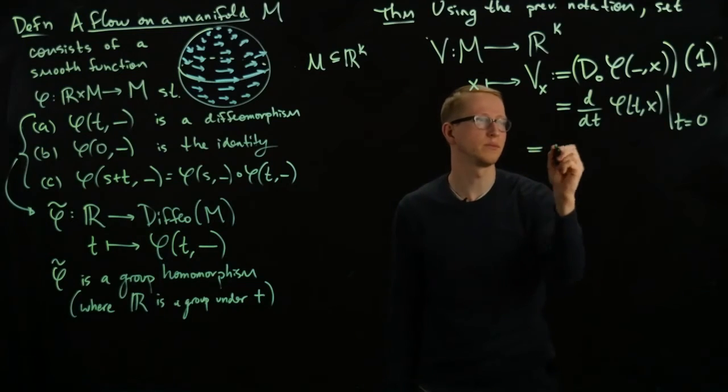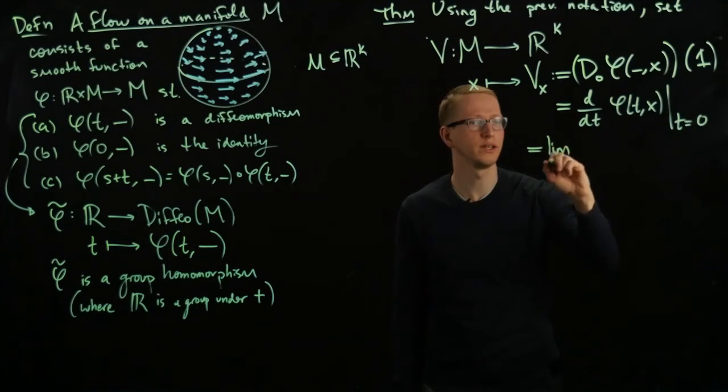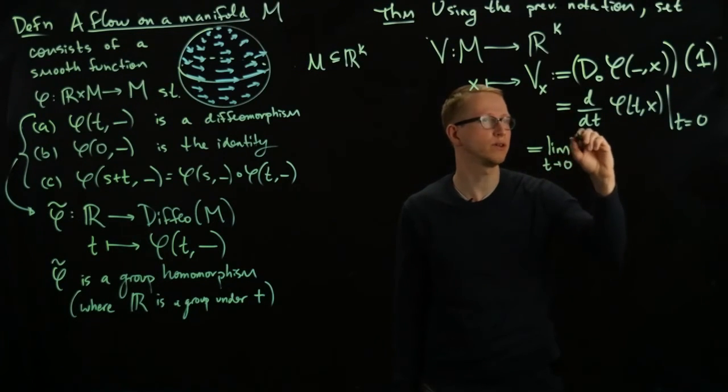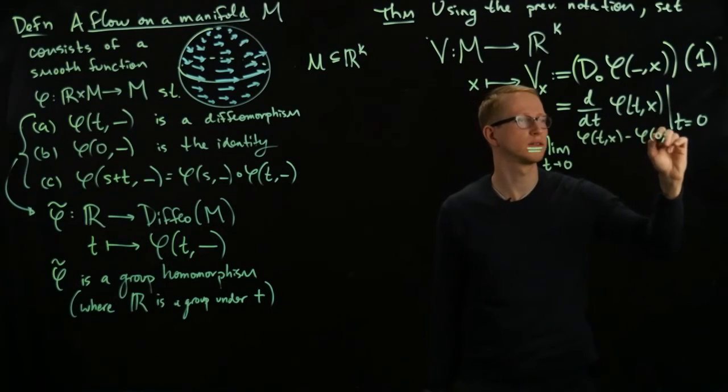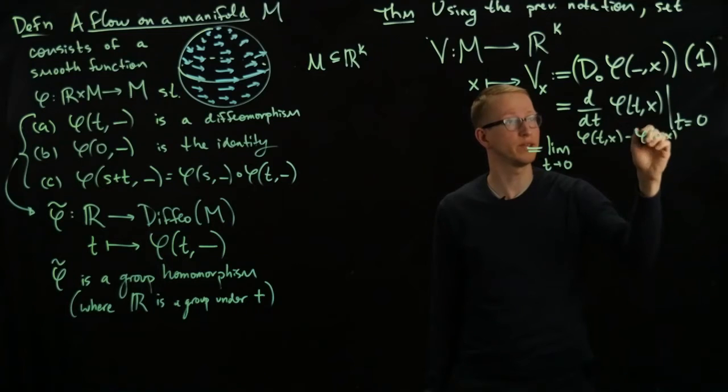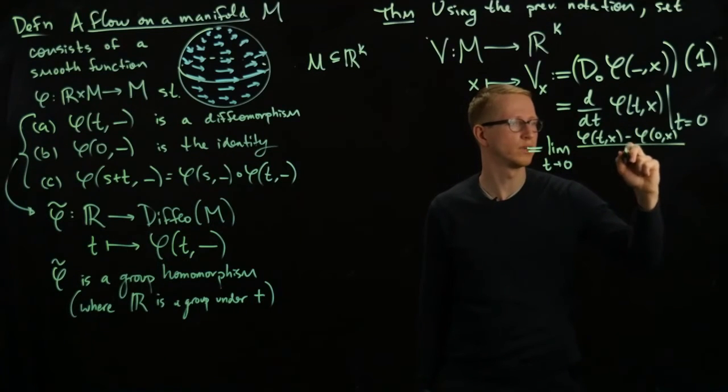Yet another way, this time, for instance, writing the definition out, this is the limit as t goes to zero of φ(t,x) minus φ(x), which is, by the way, the identity, over t.